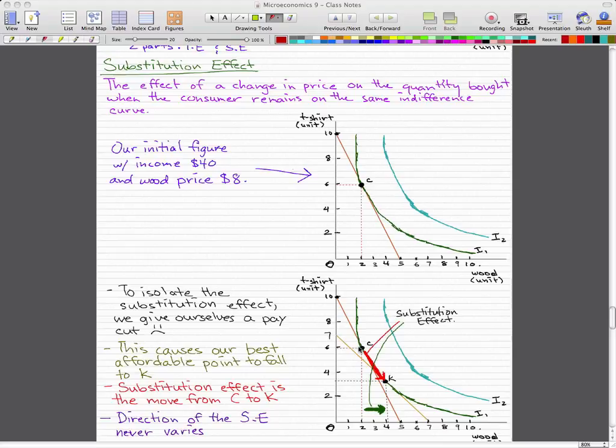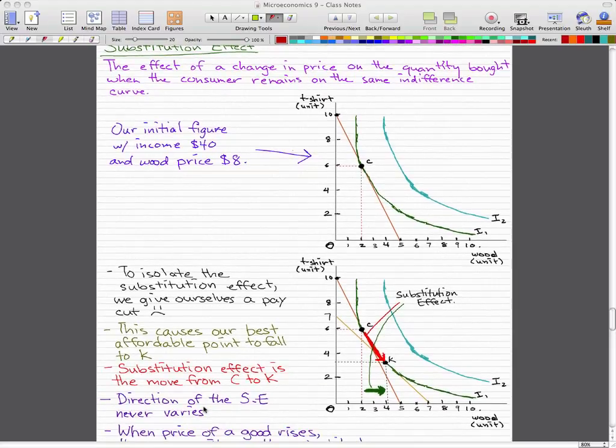It causes us to fall from point C to point K on the indifference curve, and you can see that our budget line changed. The budget line shifted to this new lighter orange budget line. But the thing is that both C and K are still on the same indifference curve. So on this new budget line, the best point to consume would be at point K. The budget line is the tangent to point K on same indifference curve I1. So the move from C to K is what we call the substitution effect.